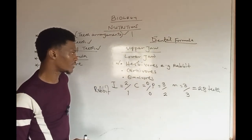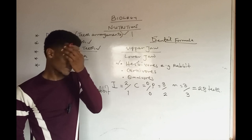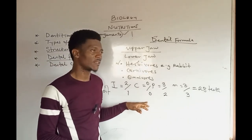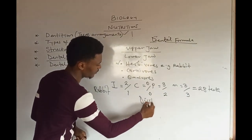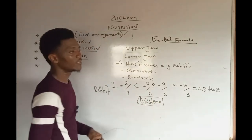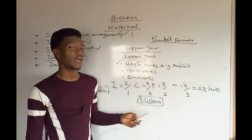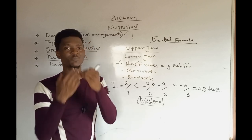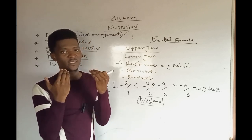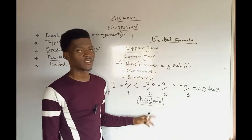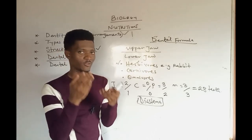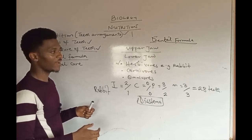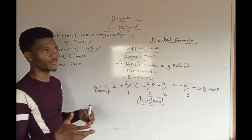Note that there is an absence of canines in herbivores because they are of no use. This absence is known as diastema. However, diastema is more broadly defined as a space in the gum where there is no teeth — it is even found in humans with gap teeth. There are other herbivores with unique dental formulas, such as cattle, sheep, and goat.